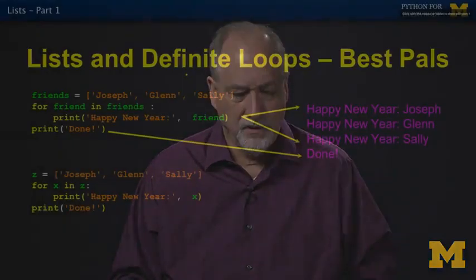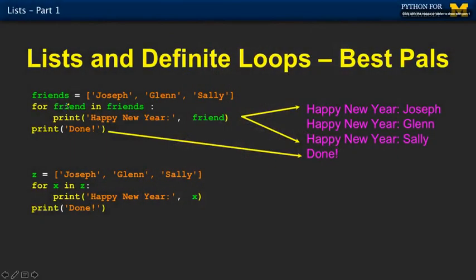Lists and definite loops are best friends. The in keyword, you can think of a list as like a set. It's a set of three strings. And the in is like for all the members of this set. So for friend in friends. Remember, the fact that I use plural here and singular here does not mean anything to Python. It means something to you as you're reading the code. That's a mnemonic variable.